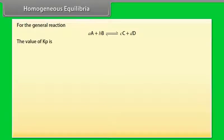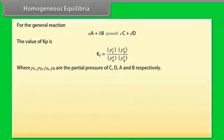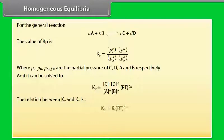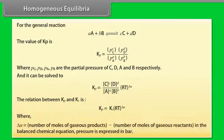For the general reaction, the value of KP is expressed in terms of partial pressures PC, PD, PA, and PB of C, D, A, and B respectively. The relation between KP and KC is: KP = KC × (RT)^ΔN, where ΔN equals the number of moles of gaseous products minus the number of moles of gaseous reactants in the balanced chemical equation, and pressure is expressed in bar.